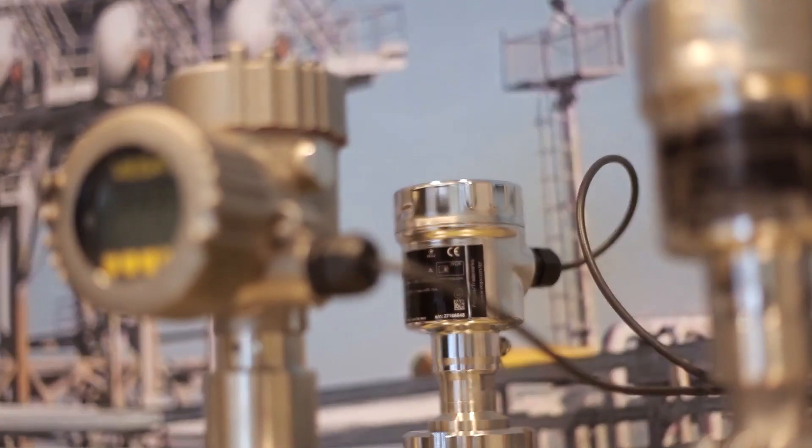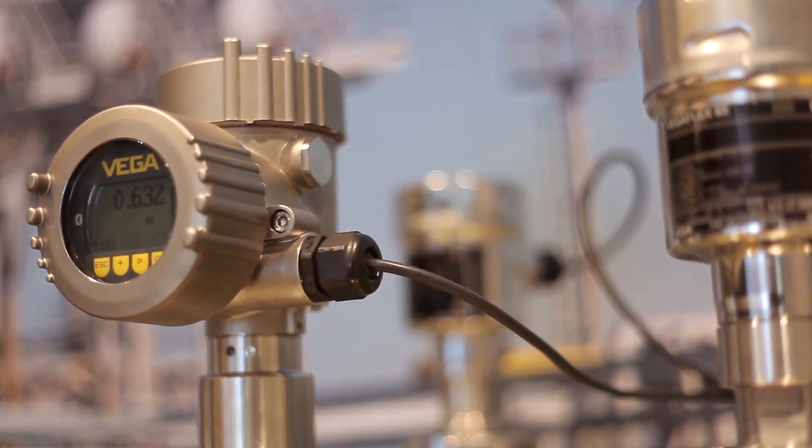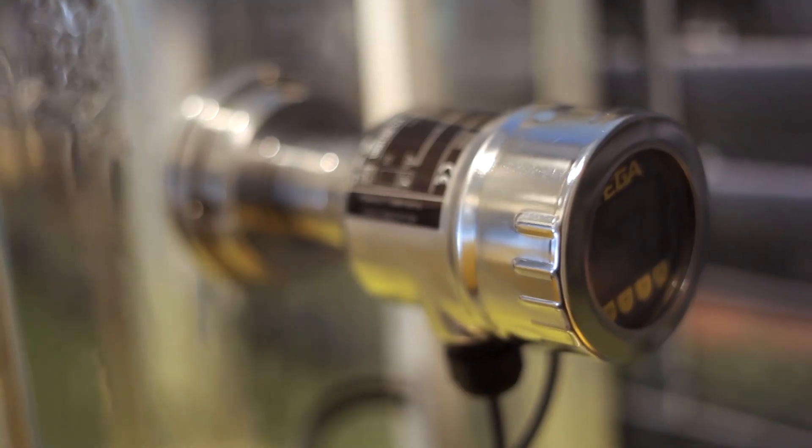How was the function test carried out until now? First, the level switch had to be removed even under difficult process conditions. Afterwards, it has to be checked manually with the medium, and finally the control system had to be checked if the signals were received correctly.